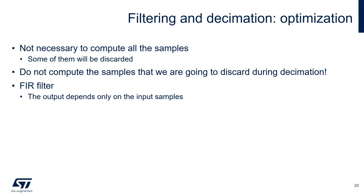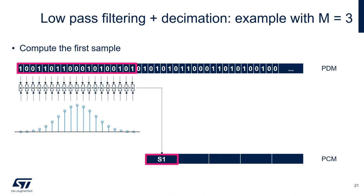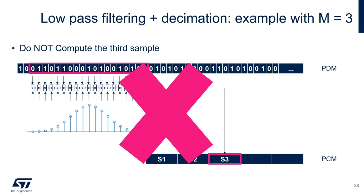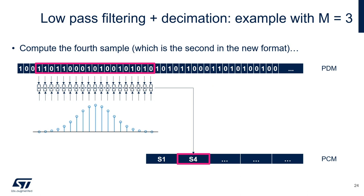As we saw in the operations of filtering and decimation, we compute some PCM samples that are going to be discarded just after in the decimation stage. In order to greatly optimize the process and avoid unnecessary processing, we can simply avoid computing the samples that will later be discarded. This is possible because we are using a FIR filter and each output sample depends only on the input samples — there is no dependency on previous outputs. So, assuming a decimation ratio equal to 3, the process becomes: compute the first sample, do not compute the second and third samples because those are going to be discarded in any case, then compute the fourth sample, and so on. In this way, we avoid wasting processing power on samples which are going to be discarded.